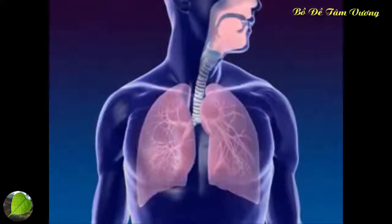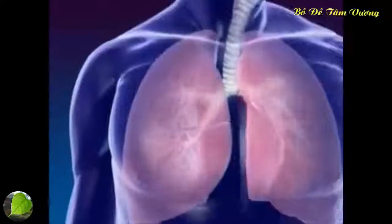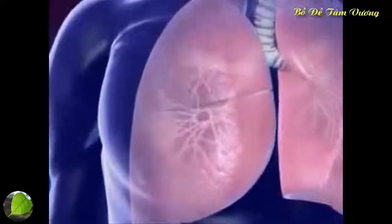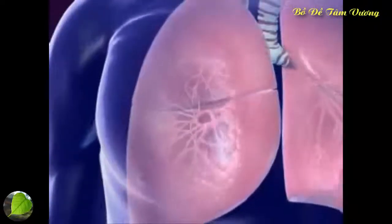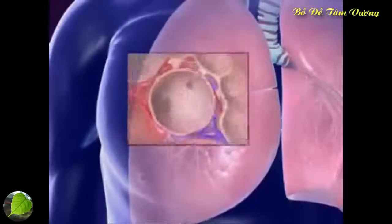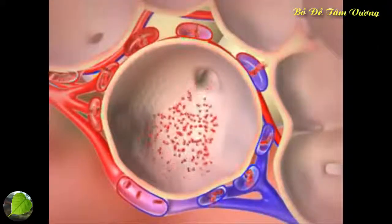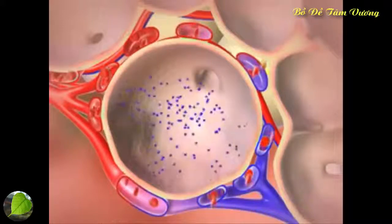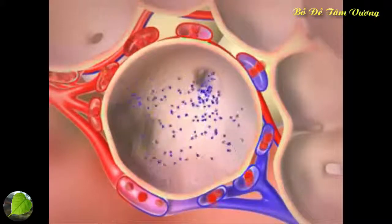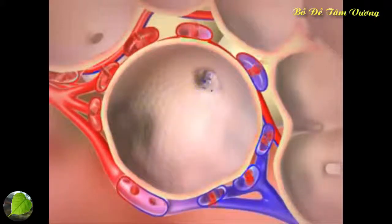Oxygenated air goes from the nose to the pharynx, larynx, trachea, bronchus, and alveoli. By the process of diffusion, oxygen in the air moves from the alveoli to the capillaries. Carbon dioxide moves from the capillaries to the alveoli and is exhaled. This process is called respiration.